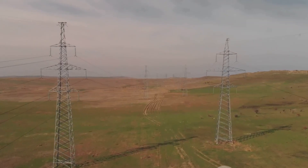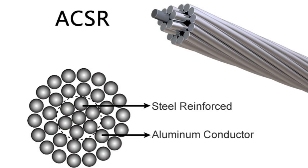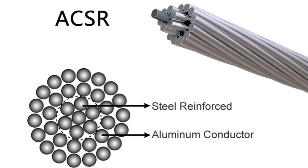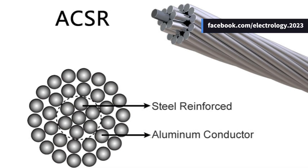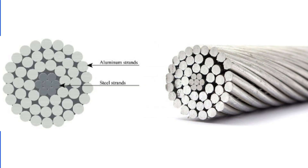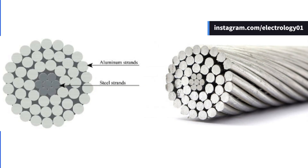Aluminium's greater sag makes it unsuitable for long spans, and that's exactly where steel-reinforced aluminium comes in — also known as ACSR, or Aluminium Conductor Steel Reinforced. The ACSR conductor consists of a central galvanized steel core surrounded by strands of aluminium. The galvanization prevents rusting and corrosion, making it ideal for long-term use in open environments. Typically the cross-sectional ratio of steel to aluminium is 1:6, but this can be increased to 1:4 if more tensile strength is needed.